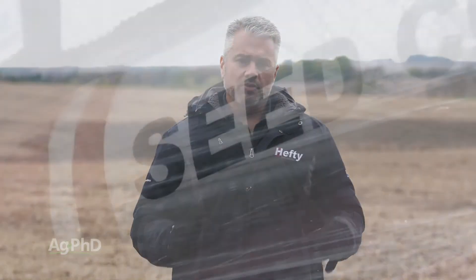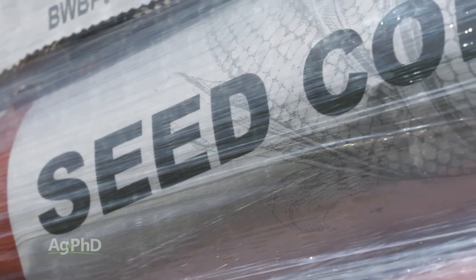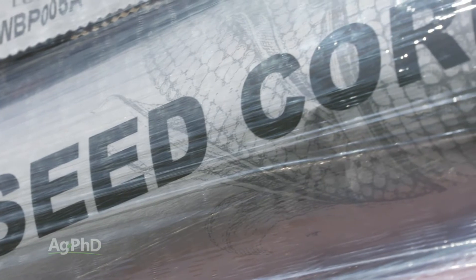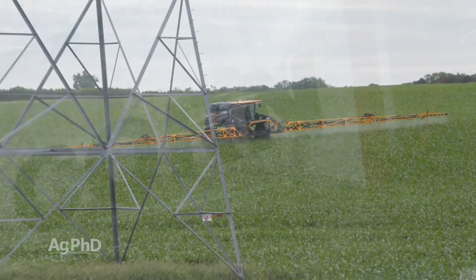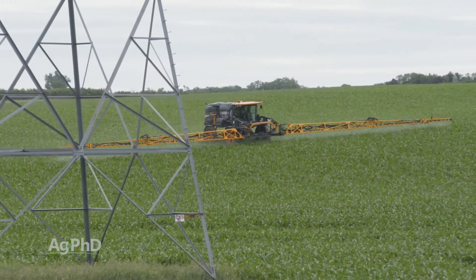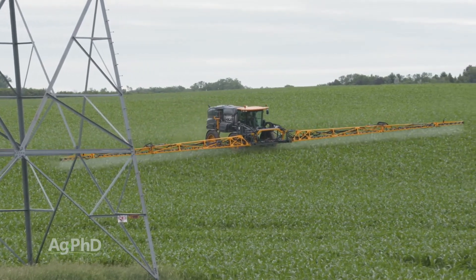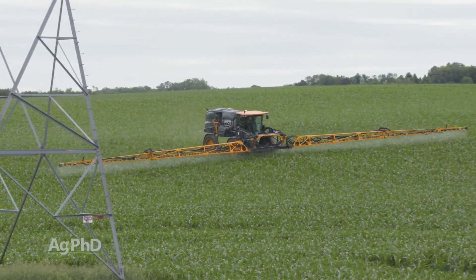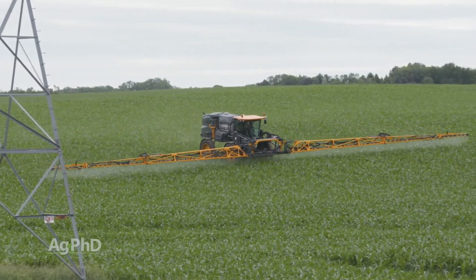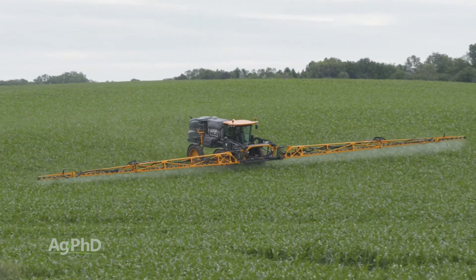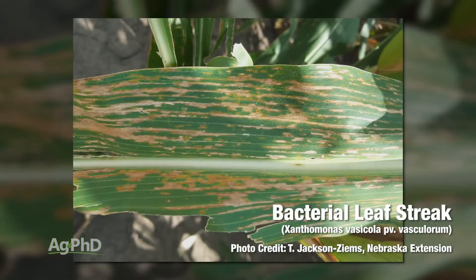The other big thing that we look at on the farm is variety selection. Certain varieties have good tolerance or even resistance to particular diseases. I can go out and spray a fungicide — that will kill fungus — but what good is that going to do on some of the bacterial diseases, like bacterial leaf spot, bacterial leaf streak, or maybe Goss's wilt?